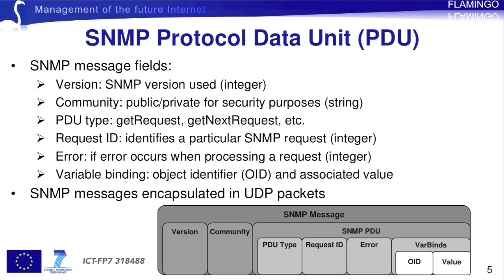The SNMP message format specifies which fields to include in the message and in which order. The message is made of several layers of nested fields, as shown on the diagram below. The main fields are the version of SNMP used, the community field which is used for security purposes, and the Protocol Data Unit, PDU for short. The latter constitutes the body of the SNMP message. The PDU type encodes the command to send to the SNMP agent, for example get or get-next.